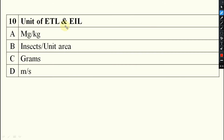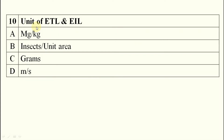The unit of both ETL and EIL is insects per unit area — for example, insects per meter square or number of insects per hectare. Some number of insects per unit area is the unit for both ETL and EIL.